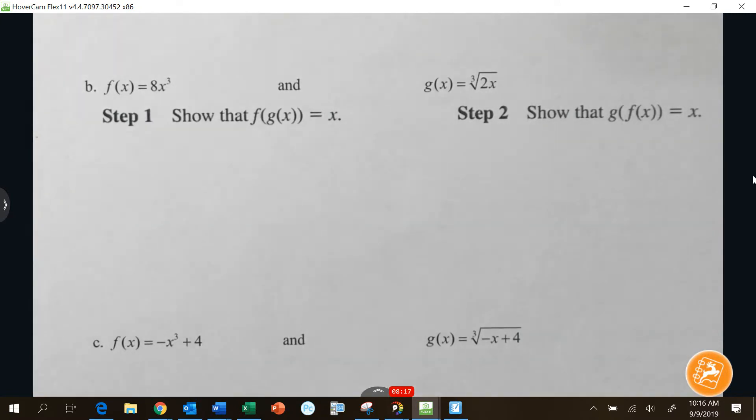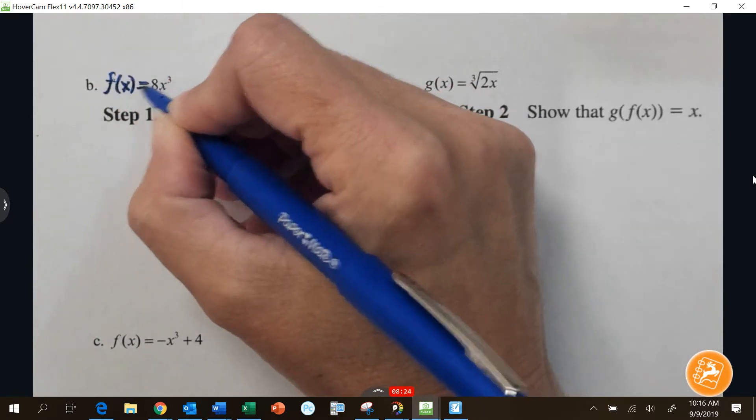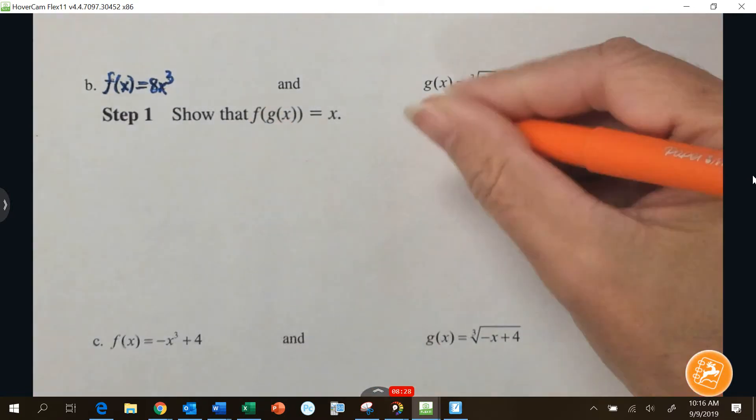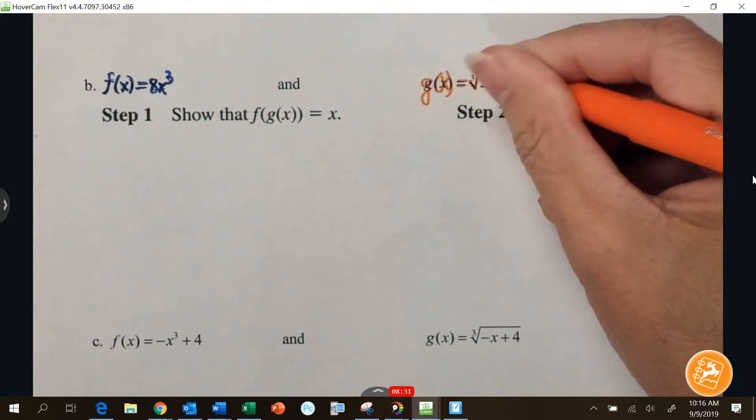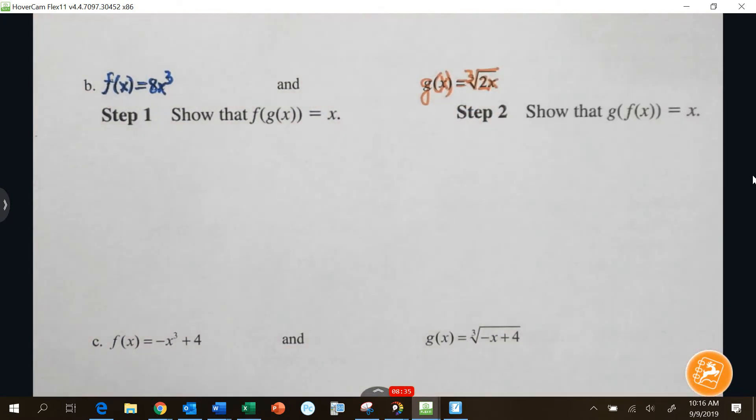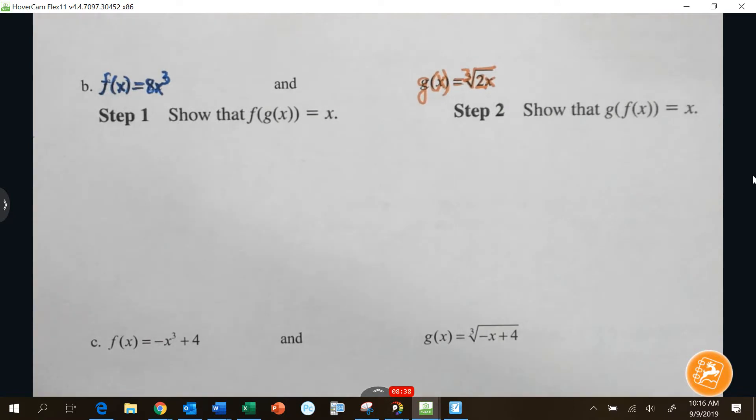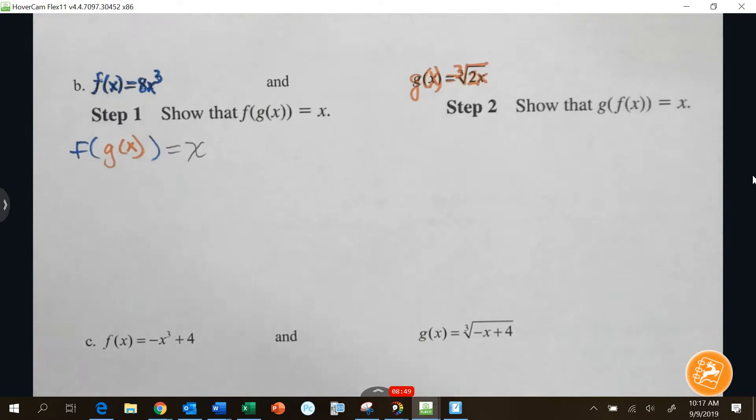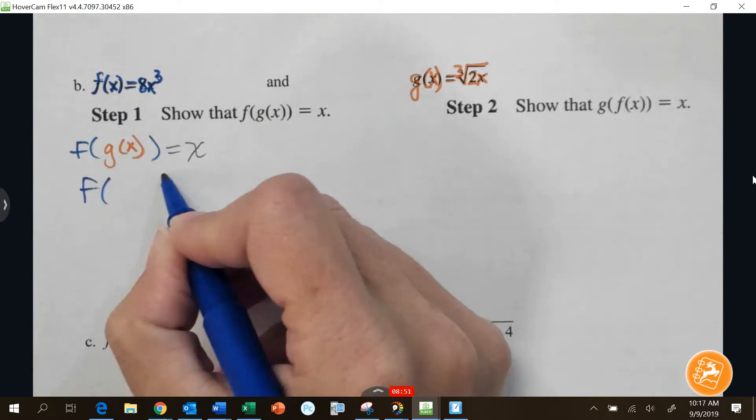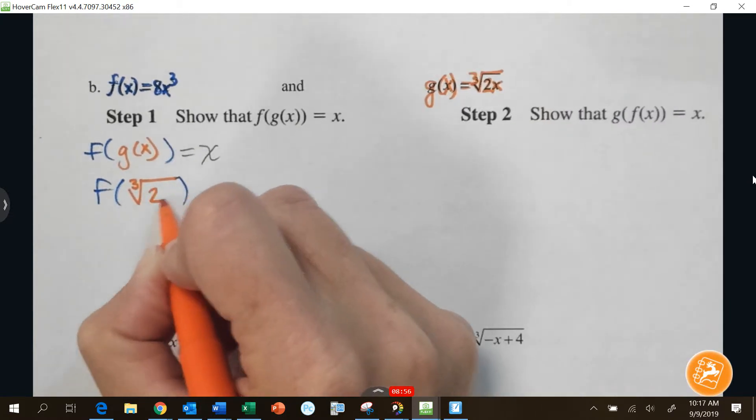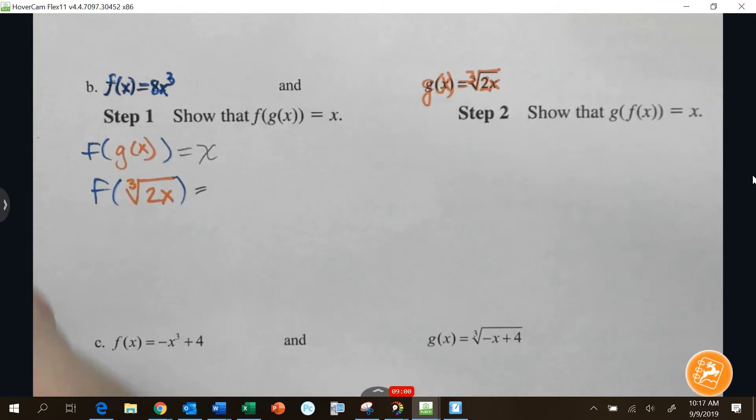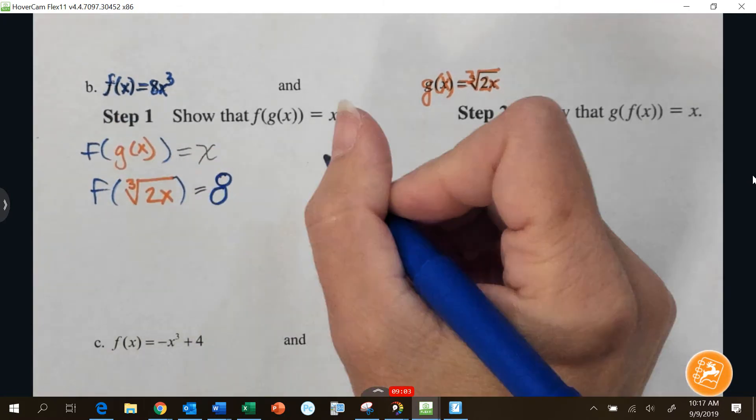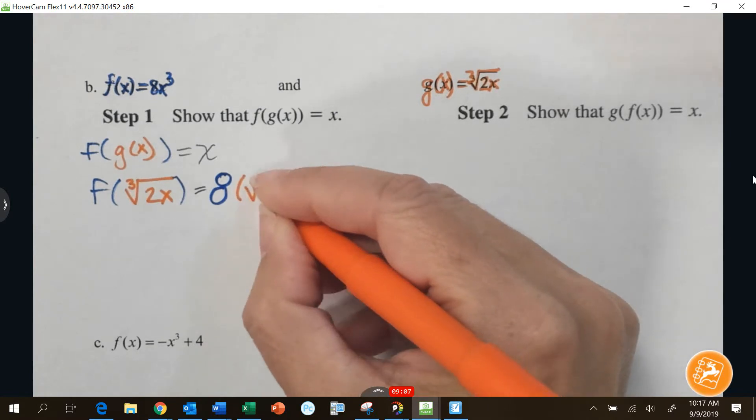Okay. So next one. Same exact thing. And I'll color code this time. So for this one, f of x equals 8x cubed and g of x equals the cube root of 2x. That kind of sounds good. Like they're going to be inverses. So we're going to show that f of g of x equals x.